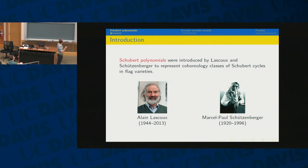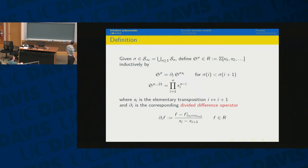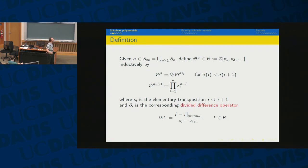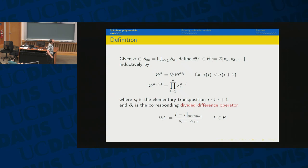Schubert polynomials were introduced by Lascoux and Schützenberger to represent cohomology classes in Schubert cycles and flag varieties. I should point out that as an older member of this community, I got to interact quite a bit with Alain. He left us 10 years ago and I still miss his great advice and his very original point of view on everything. So it's good to be able to talk about his work now.